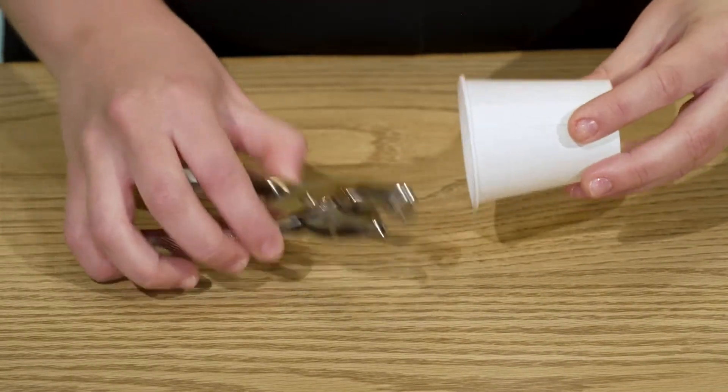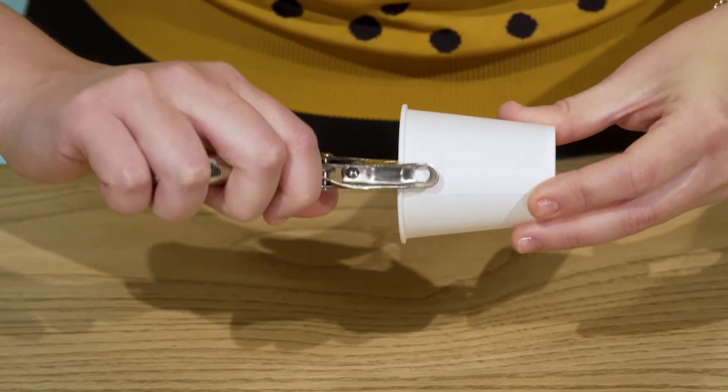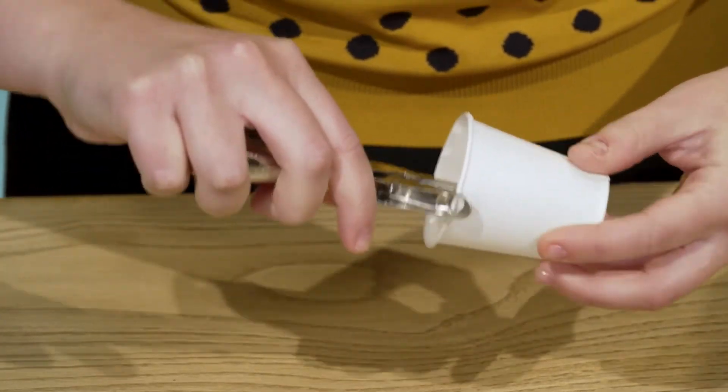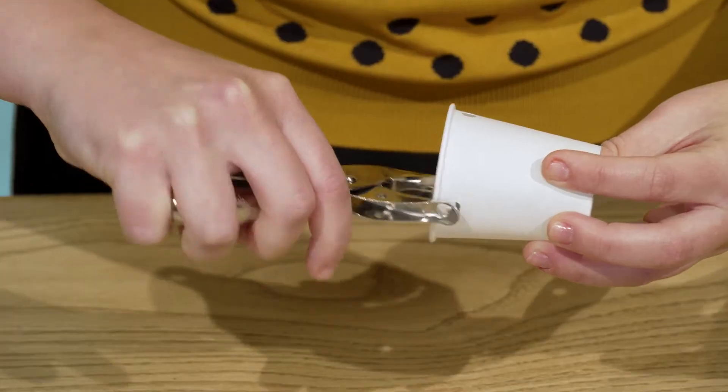First, take one of your paper cups and punch four holes just below the rim. Space the holes out equally around the cup so two pairs of holes are opposite each other.